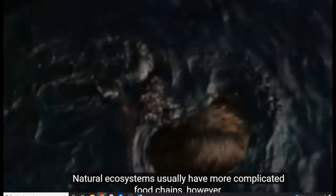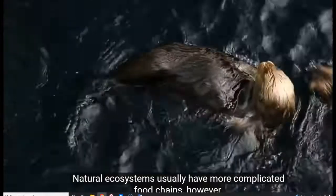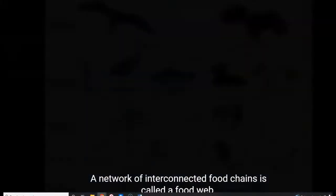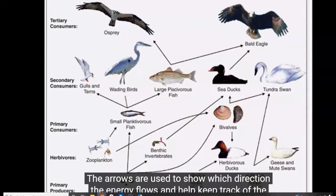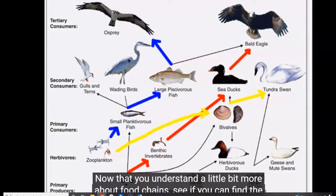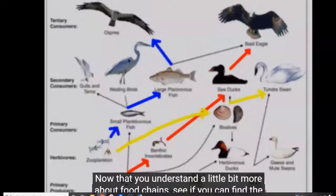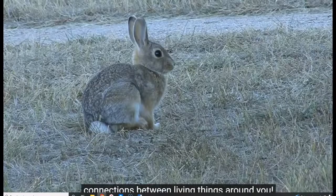Natural ecosystems usually have more complicated food chains. A network of interconnected food chains is called a food web. The arrows are used to show which direction the energy flows and help keep track of the connections between organisms. Now that you understand a little bit more about food chains, see if you can find the connection between living things around you.